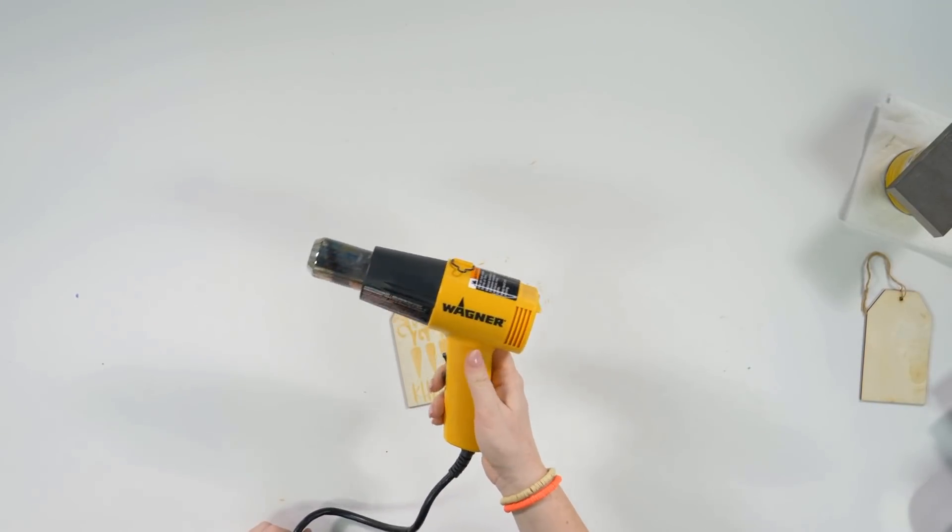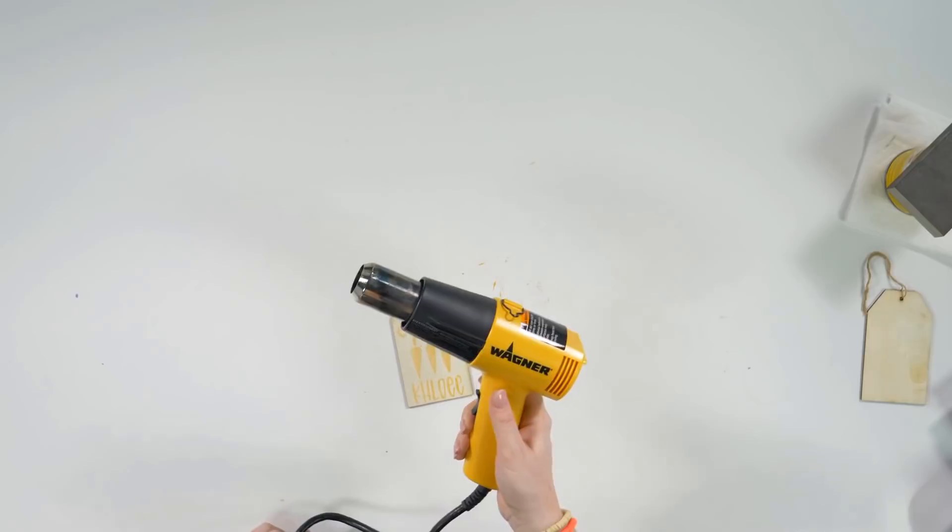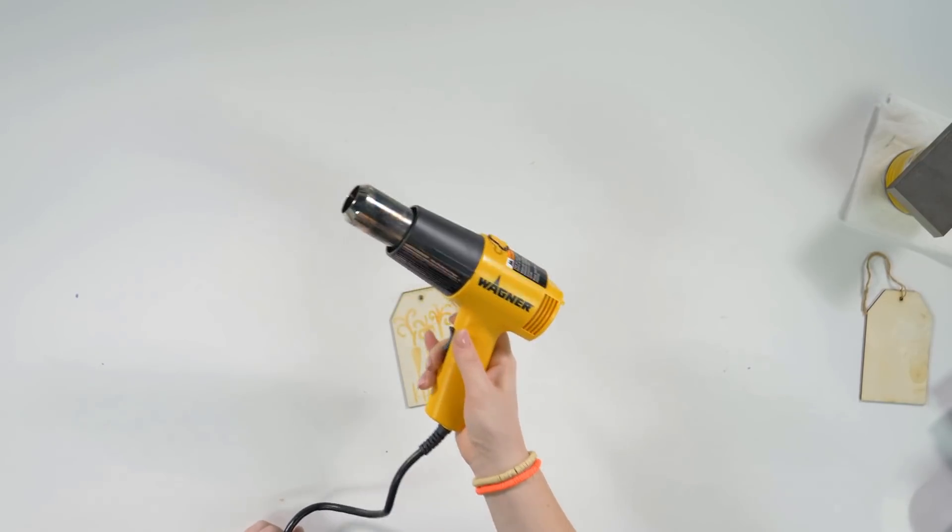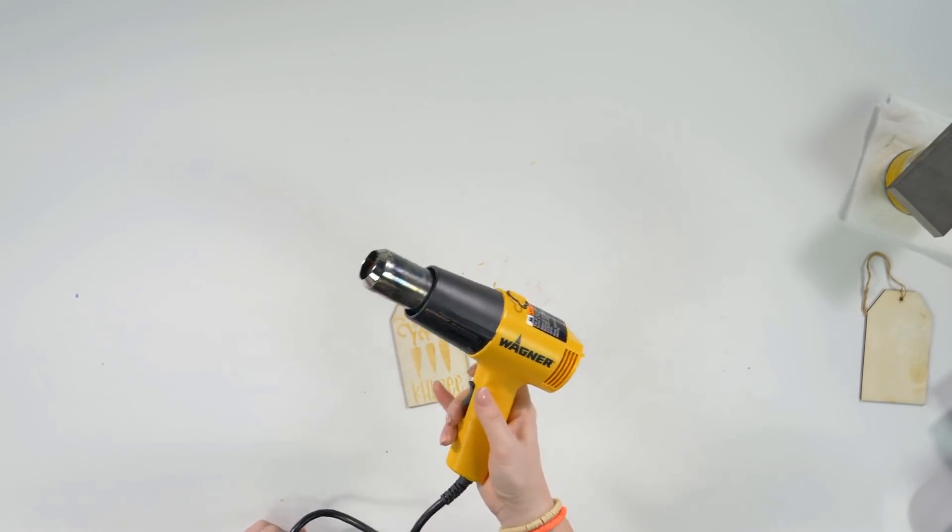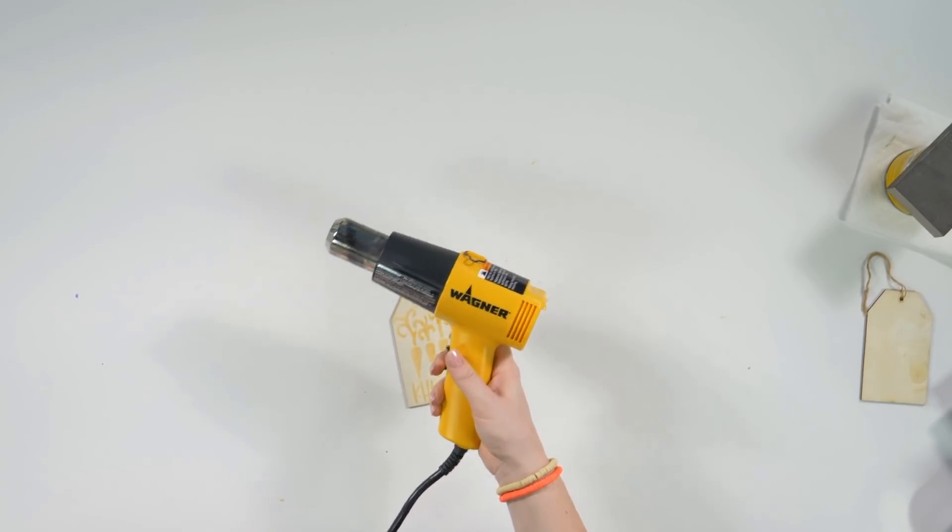So we're going to go ahead and apply the heat to our tag. Make sure you keep it about six to ten inches away. It'll take a little bit longer, but it won't burn the actual wooden part of the tag. It'll only burn where we've applied the torch paste. So you just want to make sure to keep a good distance.